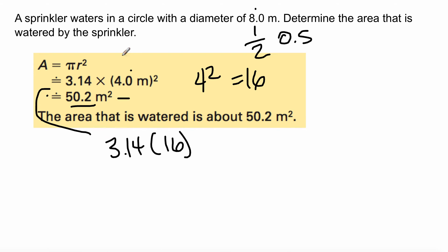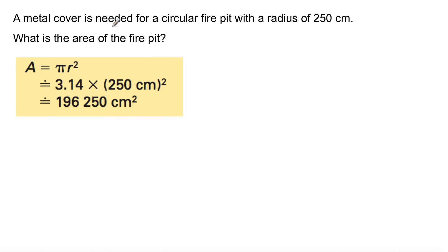Alright, so next example, last example. Here we are here. A metal cover is needed for a circular fire pit with a radius of 250 centimeters. What is the area of the fire pit? So, again, area equals pi times radius squared, 3.14 times 250 centimeters squared. Now, again, I'm missing a step.